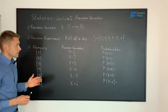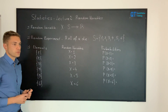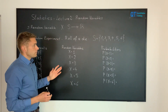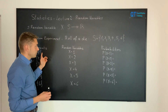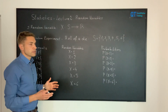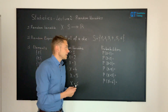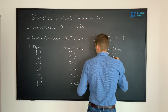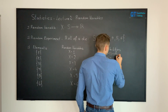Working out the probabilities here again boils down to a simple counting exercise where we put the number of elements we have for each singleton — that's one — divided by the total number of elements contained within the sample space. So for X equals one we have one element divided by six, the size of the sample space.